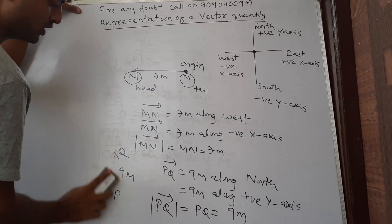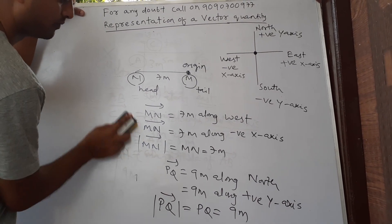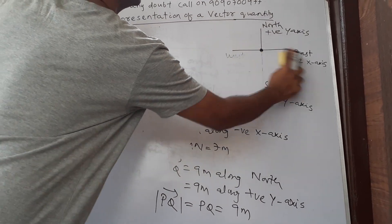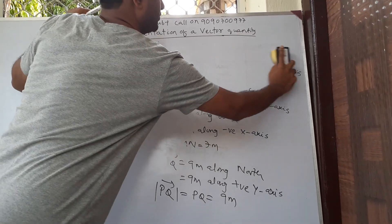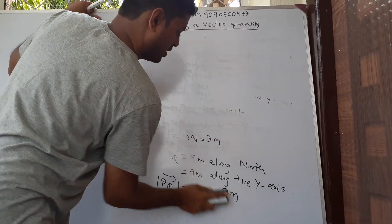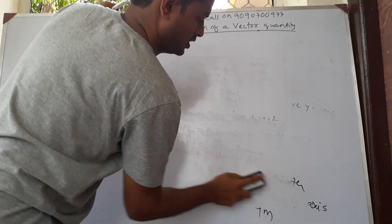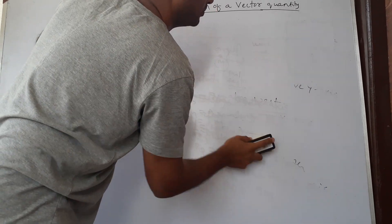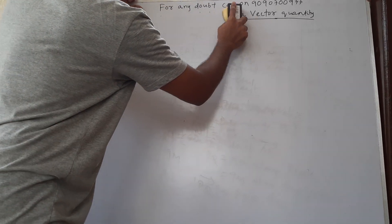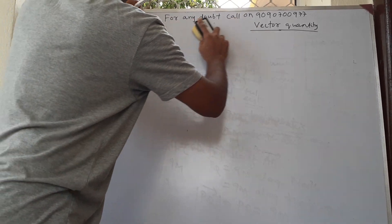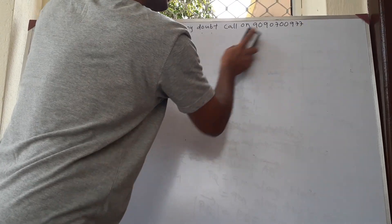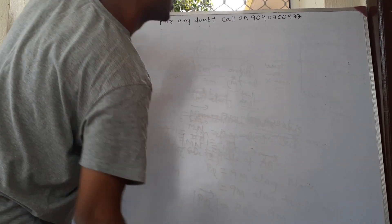So everyone should be clear about how to represent a vector by putting an arrow, and what the magnitude of a vector means. Now I am moving on to the types of vectors. Let's discuss how many types of vectors there are.